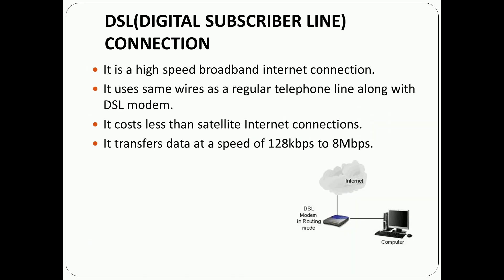The next type is DSL, which stands for digital subscriber line. It is a high-speed broadband internet connection that uses the same wires as a regular telephone line along with a DSL modem. It costs less than a satellite internet connection, and the data transfer speed is 128 Kbps to 8 Mbps.